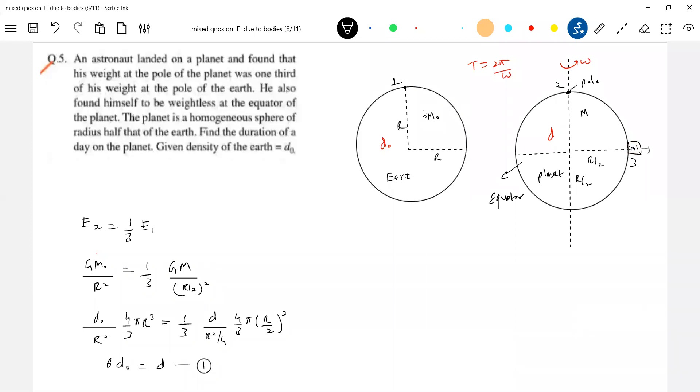So what we have to do - m dash, I'll write it. Pseudo force will act on it and the weight m dash E3 and centrifugal force m dash omega square r by 2. These two are equal, so m dash E3 is equal to m dash omega square r by 2. We are assuming both the planets - planet and Earth - to be spherical. m dash gets cancelled, so E3 is equal to omega square r by 2.